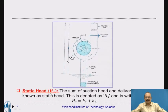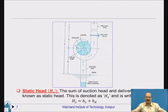Next is the static head. The static head H_S equals suction head H_S plus delivery head H_D. H_S is the suction head and H_D is the delivery head; together they give the static head. These are the different definitions used in the context of centrifugal pumps.